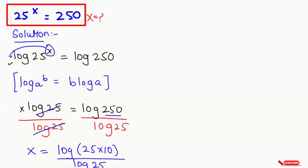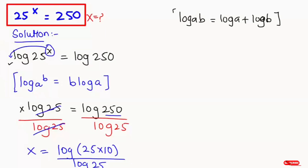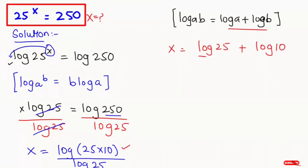Now I'm going to apply the log product rule, that is log of a times b can be written as log of a plus log of b. So I'm going to apply this: x equals log of 25 plus log of 10, all over log of 25. Now log of 25 is dividing with both terms in the numerator, so I'm going to write it with both the numerator terms.